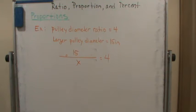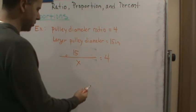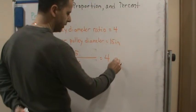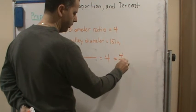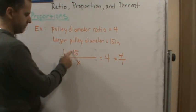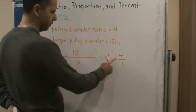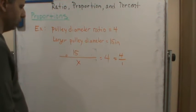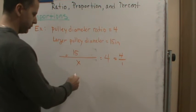Well, we can write this as a proportion. We can write any whole number as a fraction, so we can write this as 4 over 1. Now we have 15 over x equals 4 over 1, and now we can cross multiply and solve.